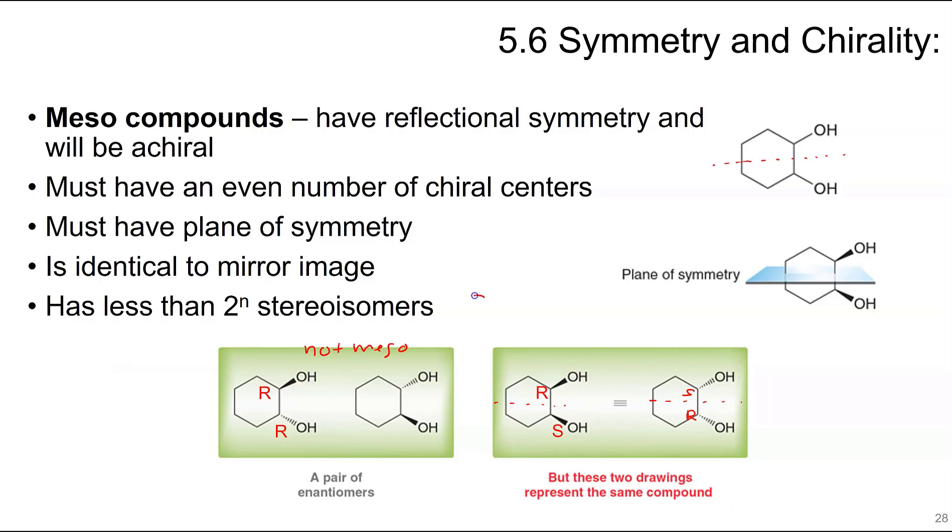When you have a meso compound possible, you can't use just the 2 to the N for possible stereoisomers. It's going to be less than that because these count as one. So it would be 2 to the N minus 1. We have 3 possible stereoisomers.